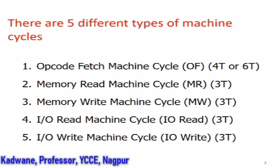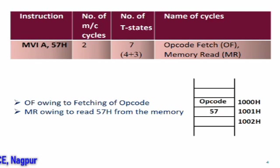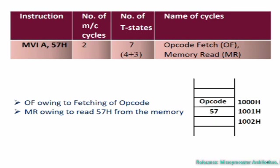Let us consider the instruction MVI A, 57H. The immediate data 57H is to be copied to the accumulator. This instruction is a two-byte instruction and it requires two bytes of space in the memory — one for opcode and other is for data, that is 57H in this case. Therefore, it requires one opcode fetch for fetching the opcode and one memory read for reading the data 57H from the memory. All instructions necessarily require the opcode fetch machine cycle.